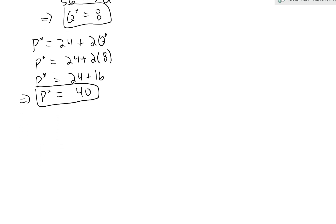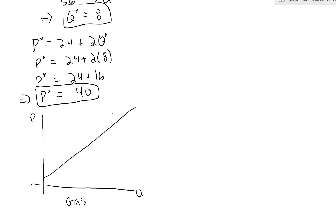On a graph of this market with price and quantity axes, showing the demand and supply curves, what we've just found is Q star equals 8 and P star equals 40.